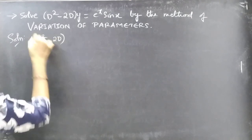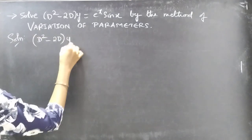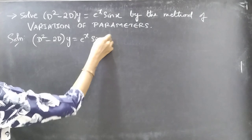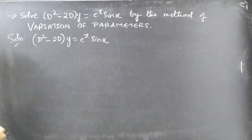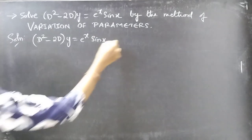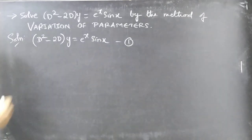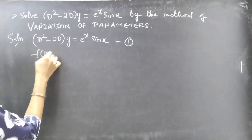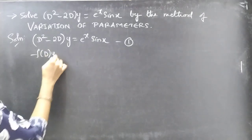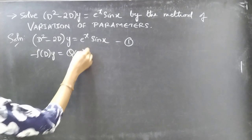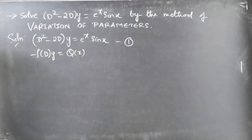The equation (D² - 2D)y = eˣsinx is the given differential equation, considered as equation number one. It is of the form f(D)·y = Q(x), where Q(x) is some function of x.